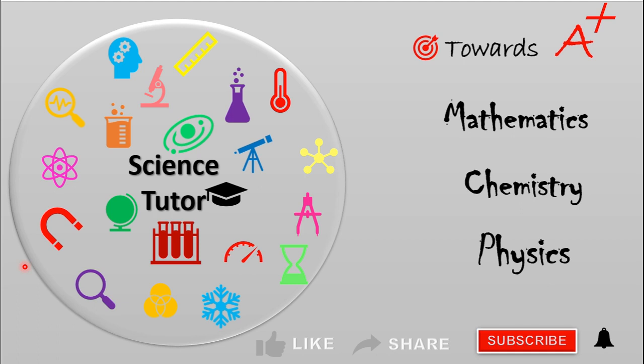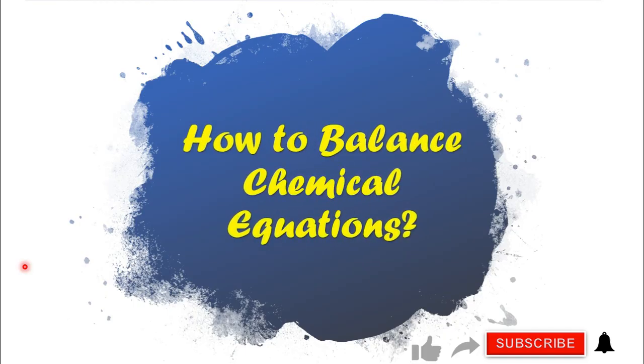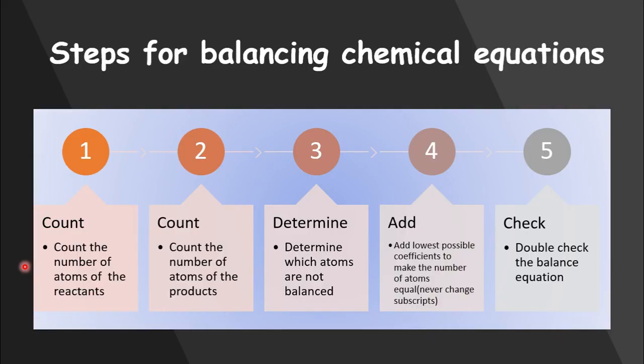Hello guys, welcome to Science Tutor YouTube channel. Today our lesson is about how to balance chemical equations. As you already know, in a chemical reaction atoms of one or more substances are rearranged to form a new set of substances. Matter is neither created nor destroyed, and atoms cannot change their identity. This implies that there should be an equal number of each type of atom on both sides of the chemical equation.